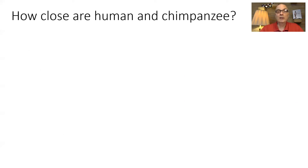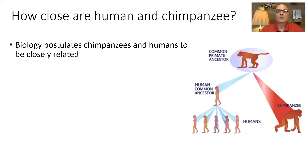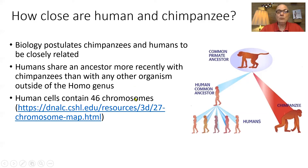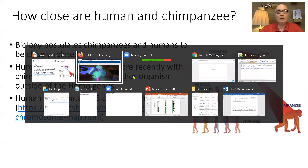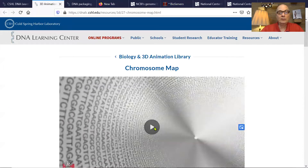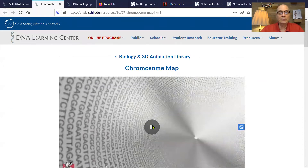How closely related are humans and chimpanzees? Biology postulates that chimpanzees and humans are very closely related, meaning humans share common ancestors with other primates like chimpanzees more so than with macaques, other monkeys, or other mammals. Let's look at this in a DNA Learning Center 3D animation that also talks about the sequencing of the human genome.